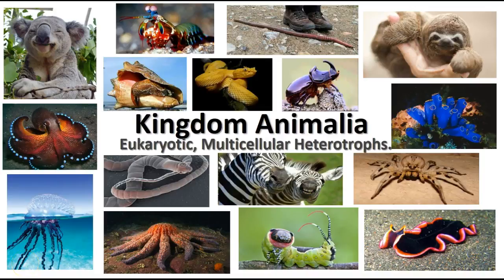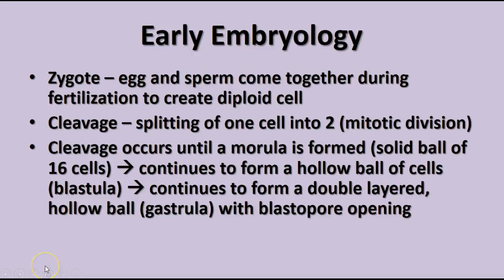This is the unit of the animal kingdom and this is the first set of notes where we'll talk about some of the basic characteristics of animals and how they begin. Animals begin with a zygote — the union of the egg and sperm. The sperm fertilizes the egg, producing a diploid cell from two haploid cells. If fertilization occurs, within a few hours cleavage begins: the splitting of one cell into two by mitosis.